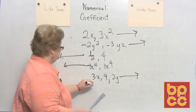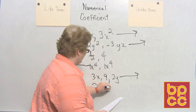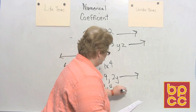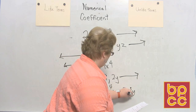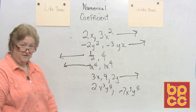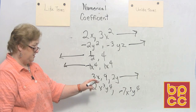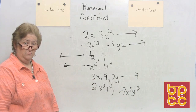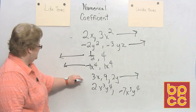And how about 2x to the third, y to the fourth and negative 7x to the third, y to the fourth? The coefficients are 2 and negative 7. But I have x to the third, y to the fourth matched with x to the third, y to the fourth. We can add, subtract, multiply, and divide those — that looks like like terms.